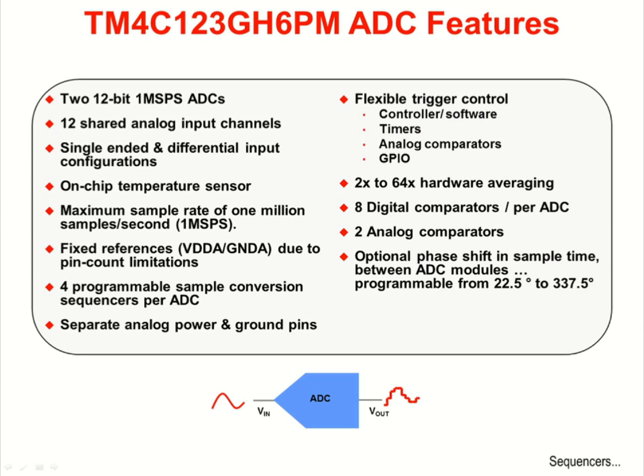Due to the low pin count of the LaunchPad device, there is a fixed reference between the analog voltage and ground and 12 shared I/O pins. There are four programmable sample conversion sequencers per ADC that we'll deal with on the next slide. Separate analog power and ground pins keep the noise between the digital and analog sides low.